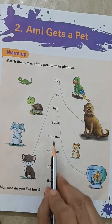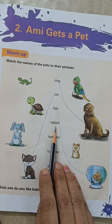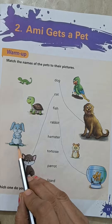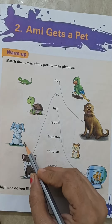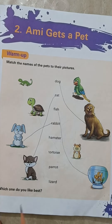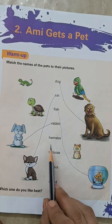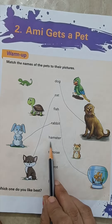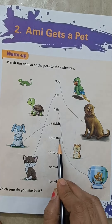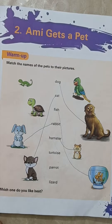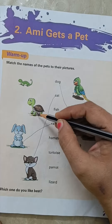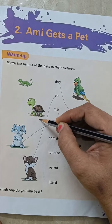Next is rabbit. Where is the rabbit? This is a picture of rabbit. We will match the rabbit with its picture. Now next is hamster — this is a picture of hamster. Next is tortoise — this is the picture of tortoise.